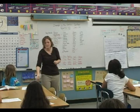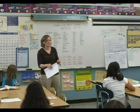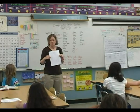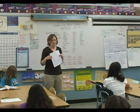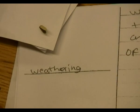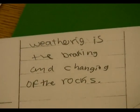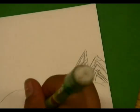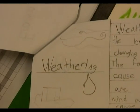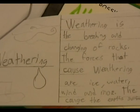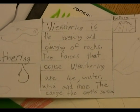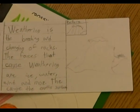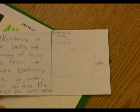Your next job is going to be to hand these in. You need to fill out your triple entry journal — include weathering. So you need a definition and a picture that describes weathering. Leah and Nathan both have sort of time-lapse pictures — a before and after weathering — so a rock that's full and then a rock after it's broken.